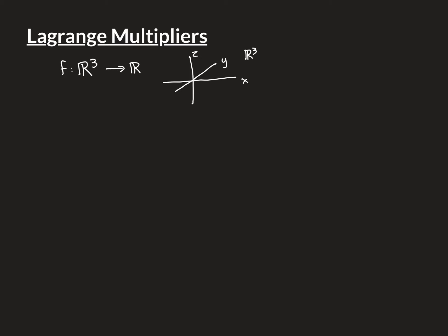The example we'll take for calculations in this video is the unit sphere. This is all the points in R3 that satisfy x² + y² + z² = 1. So this is the point (1, 0, 0) here, (0, 1, 0) over here, (0, 0, 1) up here, etc. — all the points on this unit sphere, and that's our two-dimensional surface.